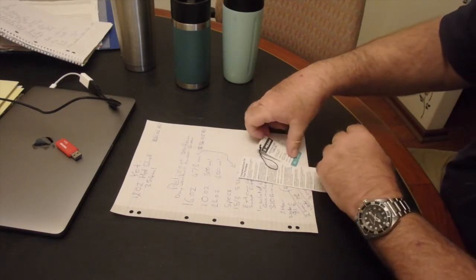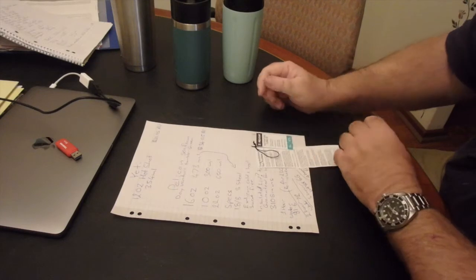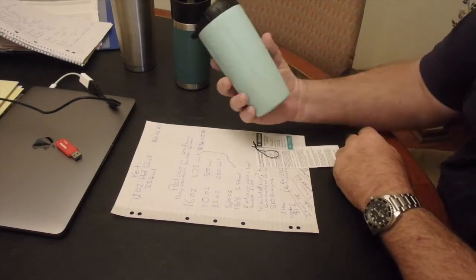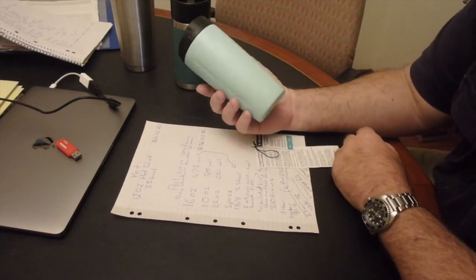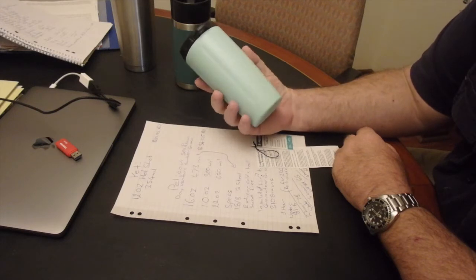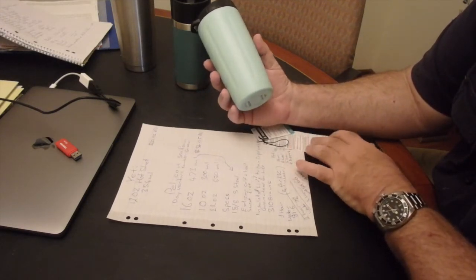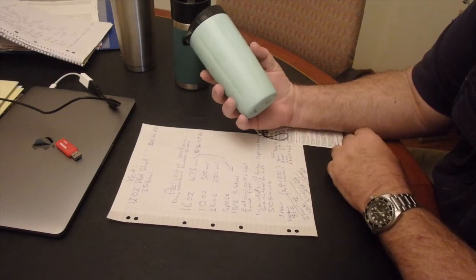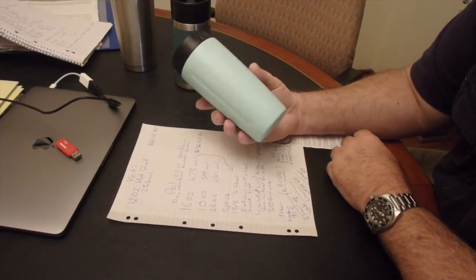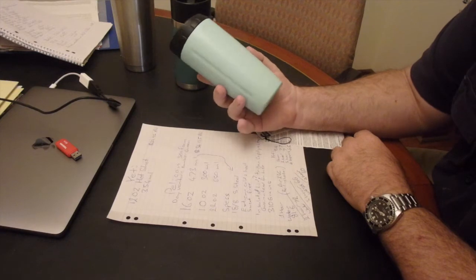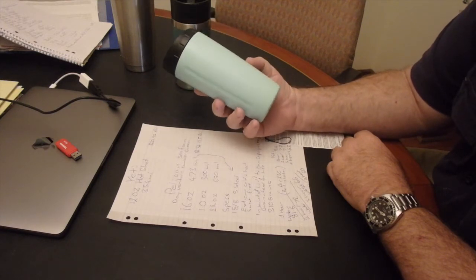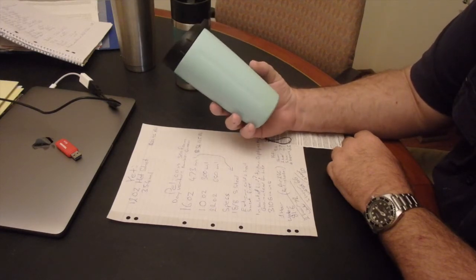So specifications: 18.8 stainless, extreme cold and heat retention, sweat free, insulated lid made of a Triton Co-Polyester, guaranteed for life, weighs in at 310g. Now it does hold the stated volume of 473ml just.